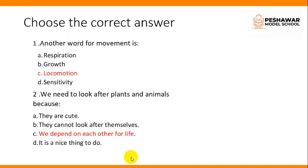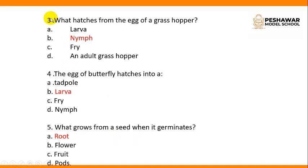Now choose the correct answer. Do these exercises in your book, page number 39. Number 1: Another word for movement is — option C: Locomotion. Number 2: We need to look after plants and animals because we depend on each other for life. Plants and animals also depend on each other. Number 3: What hatches from the egg of a grasshopper? — Option B: Nymph.